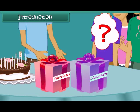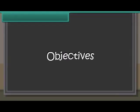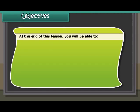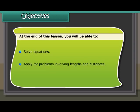In these cases, we use variables for the unknown number of chocolates. By solving the equation formed, we can find the number of chocolates, which is the unknown. Objectives: At the end of this lesson, you'll be able to solve equations and apply them for problems involving lengths and distances.